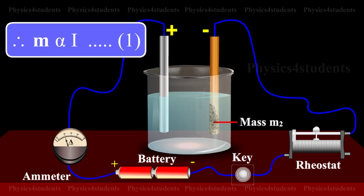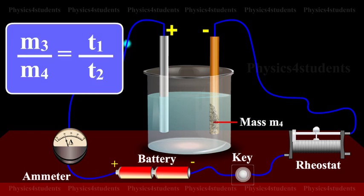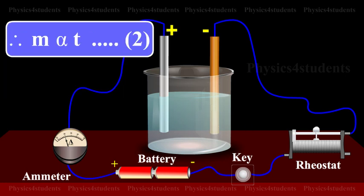The experiment is repeated for same current I but for different times T1 and T2. If the masses of the deposits are M3 and M4 respectively, it is found that M3 by M4 is equal to T1 by T2. Therefore, M directly proportional to T. This is equation number 2.